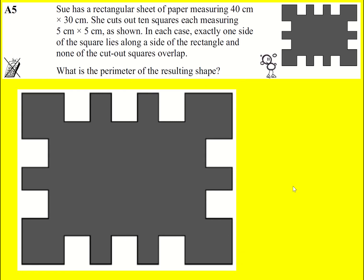We've got this rectangular piece of paper and we're told that it is 40 by 30 centimeters. So I'm just going to work out the perimeter of the original piece of paper. It's going to be 2 times 40 plus 30, it's going to be 140.